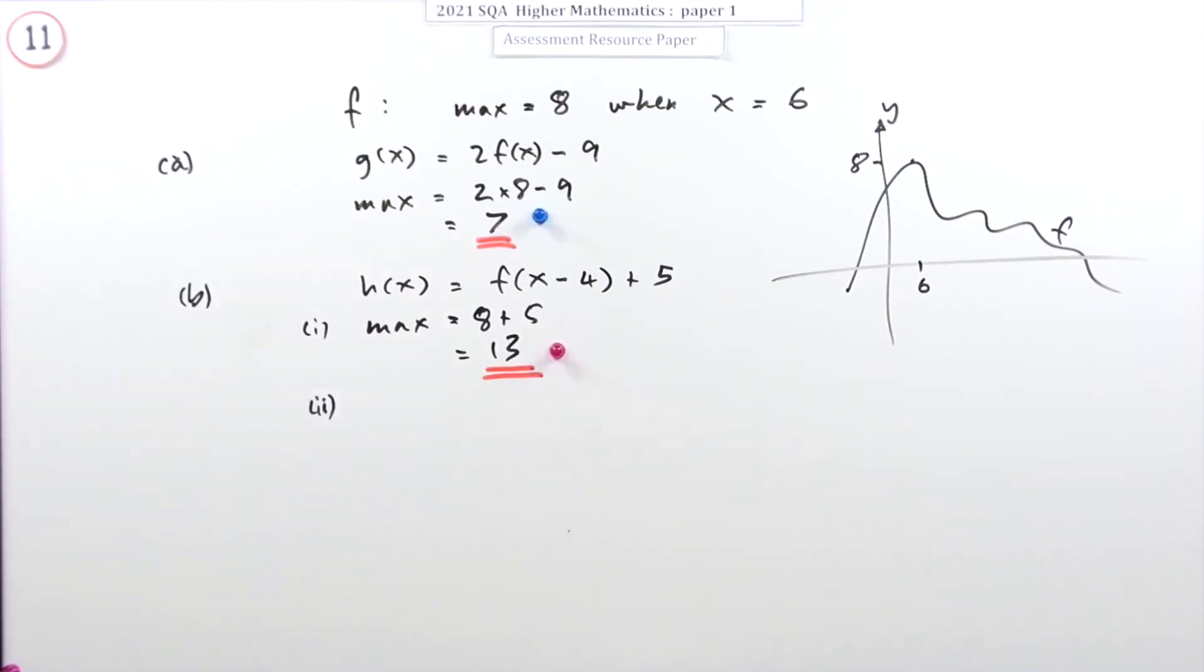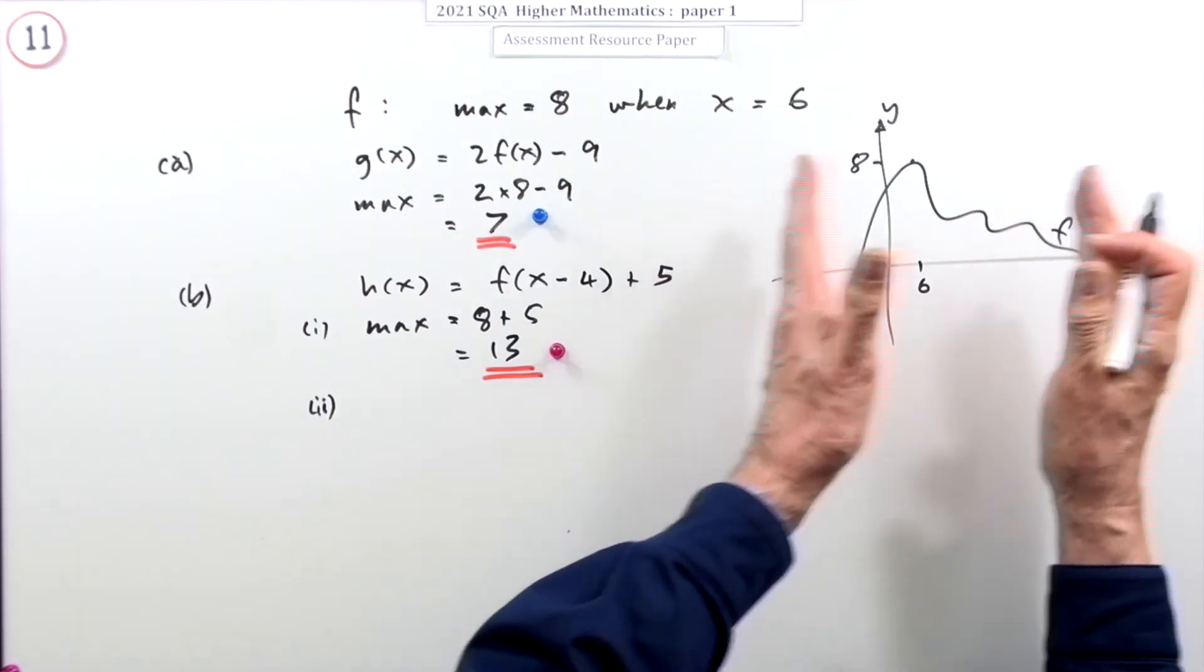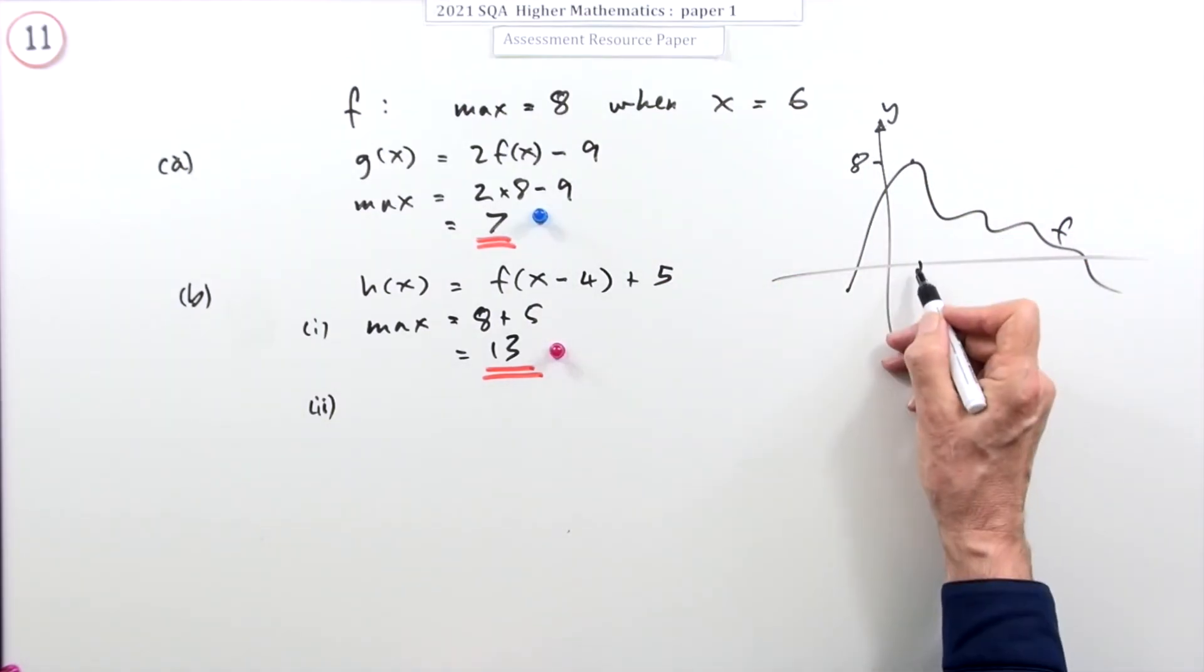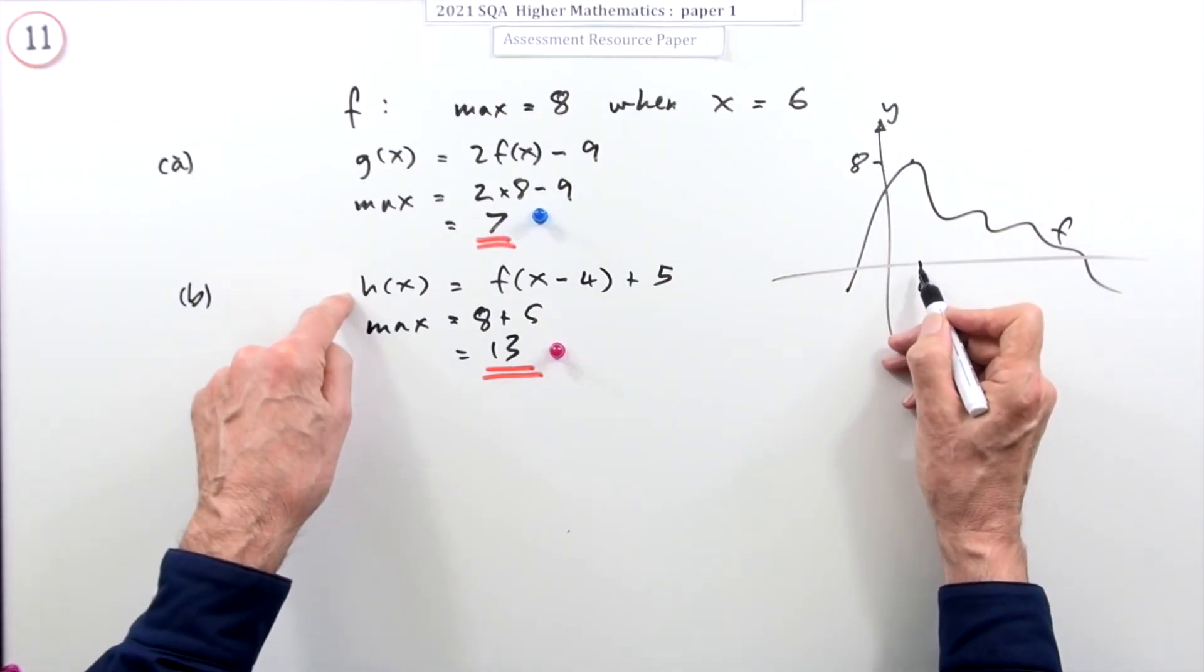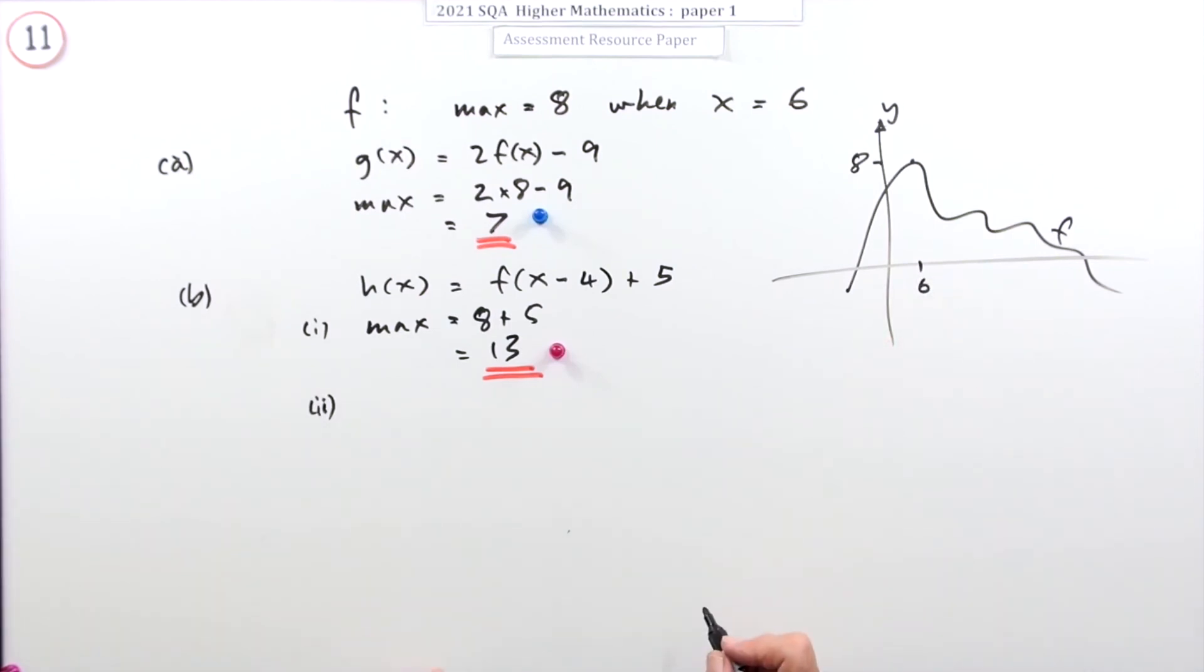Part two says when though? Well, you can just think it's been shifted forward four, so if that happened at six, then that's going to happen four forward, so it's going to be at ten.